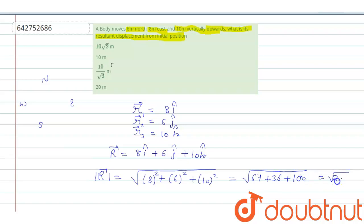So, it becomes root 200 or we can write it as 10 root 2 meter. So, we can say that option number 1 is correct.